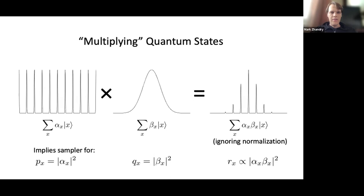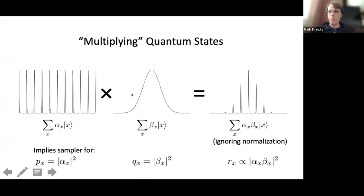Having a quantum state, you can always measure it and get a sample where outputs are proportional to the squared amplitude. So we're hoping for stronger inputs: rather than just a sampler, we're given a quantum state — which implies a sampler — and we want to multiply these to get a quantum state for the product, which then implies a sampler for the product distribution. Stronger inputs, stronger outputs.